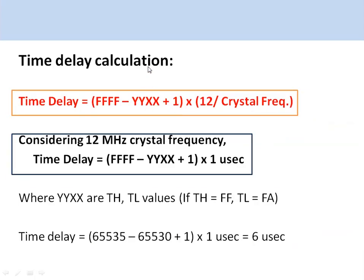For time delay calculation: these timers are used for generating time delays. The formula is: time delay = (0xFFFF − YYXX + 1) × (12 / crystal frequency), where YYXX is the value loaded into TH and TL. For a 12 MHz crystal, each timer tick is 1 microsecond.